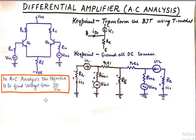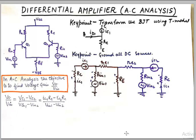Now when we perform the AC analysis, this is our objective is to find the voltage gain. And the voltage gain is given by V0 upon Vin. So when the objective is clear the things becomes a lot easier. So V0 upon Vin can be written as VC1 minus VC2 upon Vin1 minus Vin2.